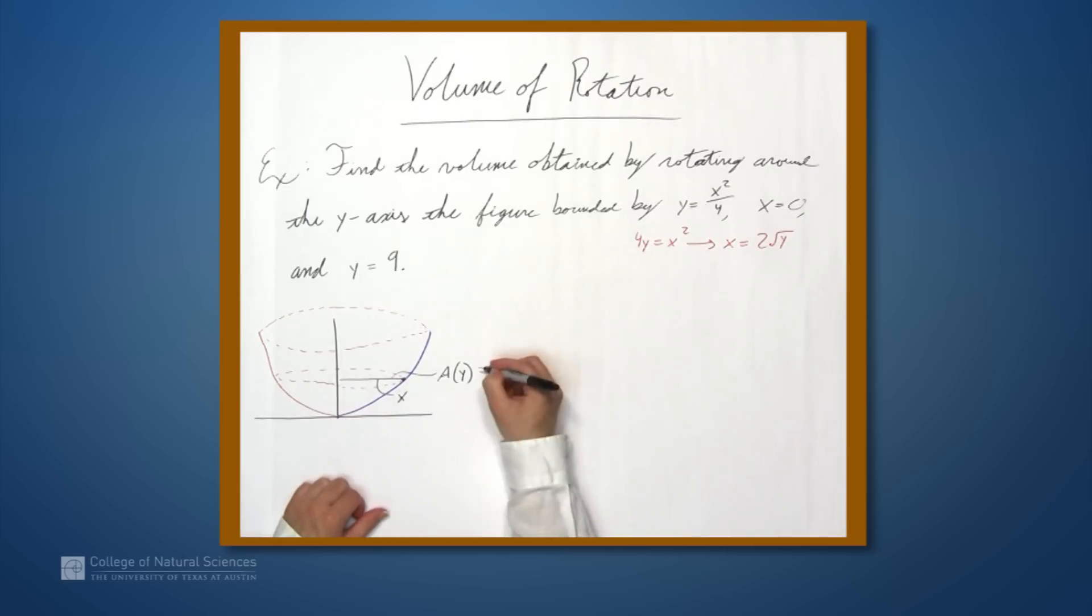So a of y, then, is pi r of y squared. We could also write pi times x squared. And this is pi times 4y.